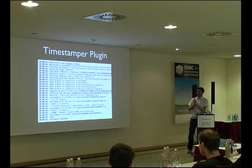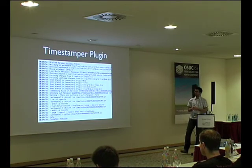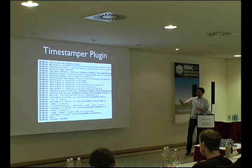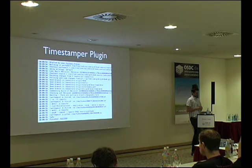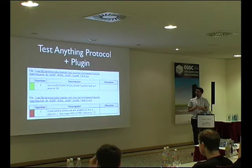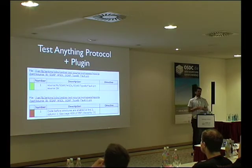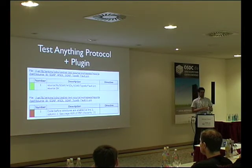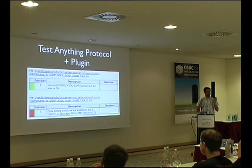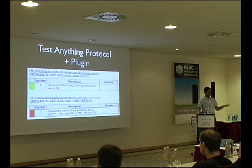Ich kann das Timestamper-Plugin schwer empfehlen, weil ein klassisches Problem ist: Warum dauert der Jenkins-Job so lange? Man sieht den Konsolen-Output, aber weiß nicht, was eigentlich so lange gedauert hat. Das Plugin ist leider nicht standardmäßig installiert, aber ganz leicht zu installieren – damit kriegt man auf der linken Seite die Timestamps sichtbar, sodass man nachvollziehen kann, wo ein Build-Step lang gedauert hat. Genauso empfehlenswert ist das Test-Anything-Protocol-Plugin. JUnit erfüllt nicht alle Anforderungen; wenn man aus der Perl-Richtung kommt, kann man TAP-Output bevorzugen – man installiert einfach das Plugin und das funktioniert genauso.